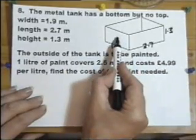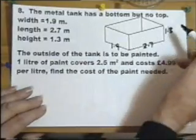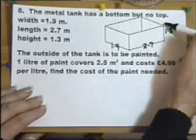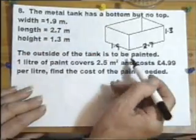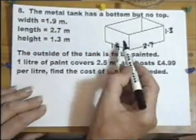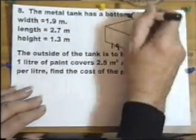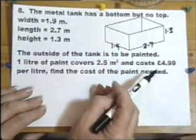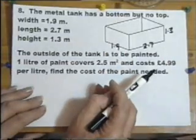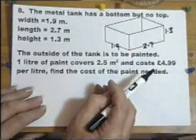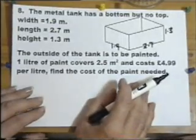So I'm going to paint the outside of this tank - this face, this face, the other side of this face, the other side of this face, and the bottom. I'm going to paint one, two, three, four, five rectangles.